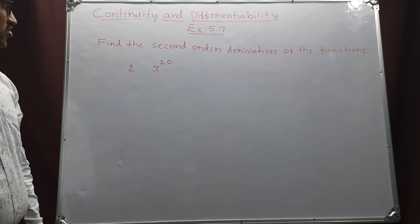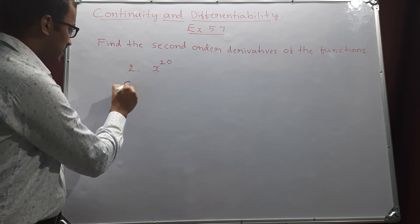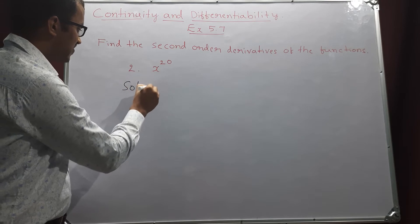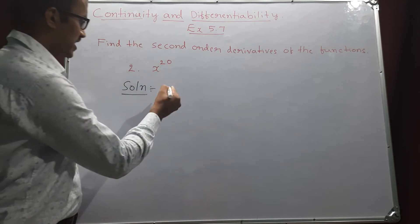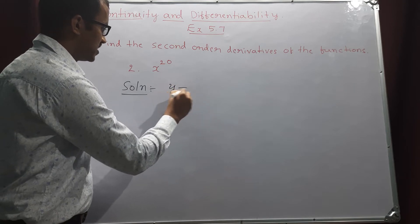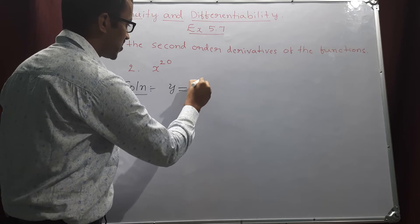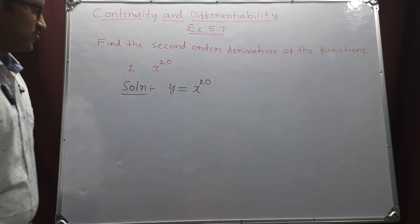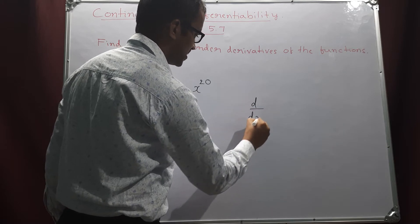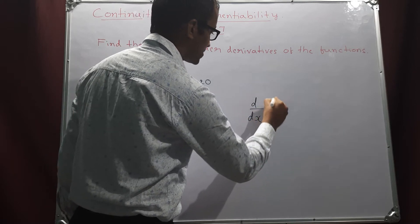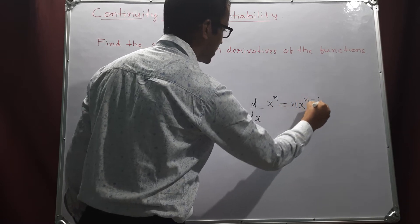Second question: x power 20. We have to find the second order derivative. Let y equals x power 20. We know the standard formula: derivative of x power n becomes n into x power n minus 1.